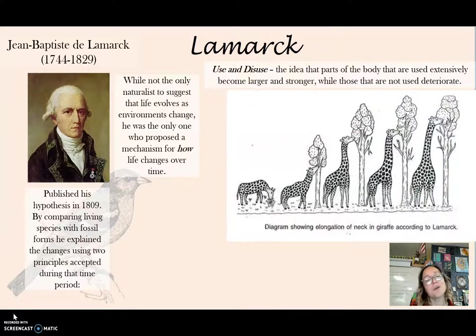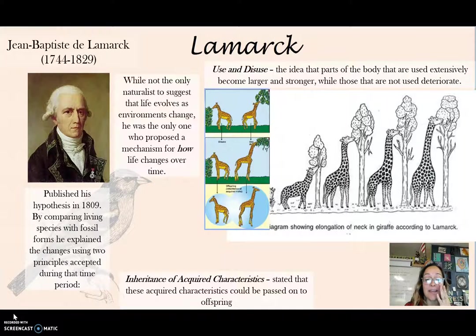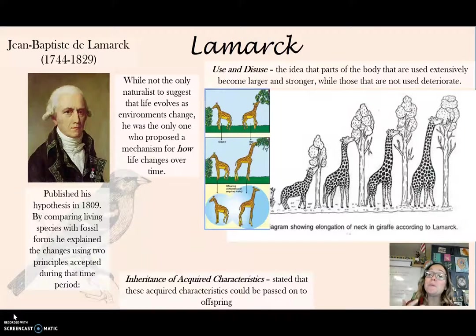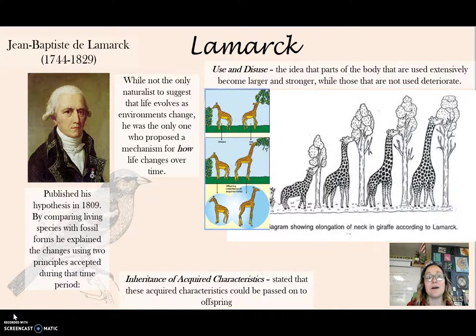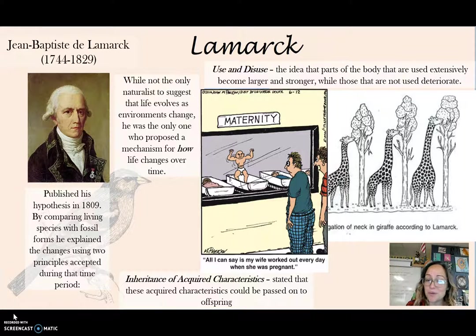Lamarck's second principle — the common example being giraffes — is that if they stretch their neck long enough, it'll be longer and they'll get that food. That second principle, inheritance of acquired characteristics, stated that these acquired characteristics — that giraffe with the longer neck — could be passed on to offspring. Basically, if we strive to have certain characteristics during life, they'll be passed on to our offspring. As a little joke: a woman working out while pregnant and having a physically fit offspring — which we know is testable and doesn't really work this way.